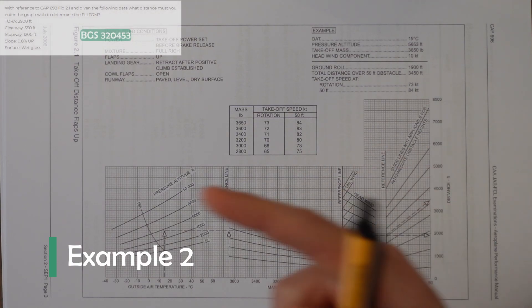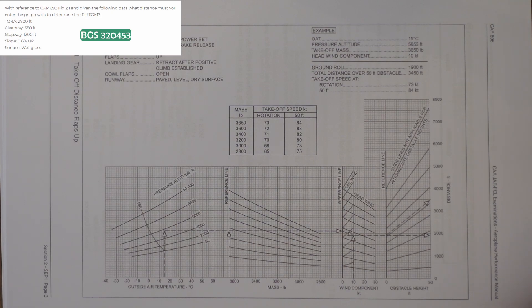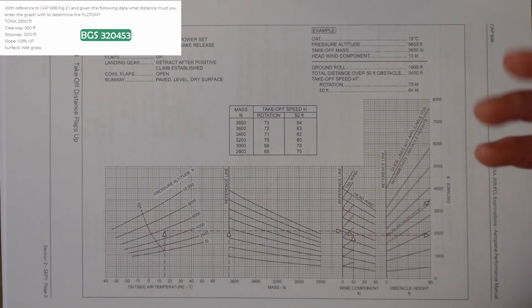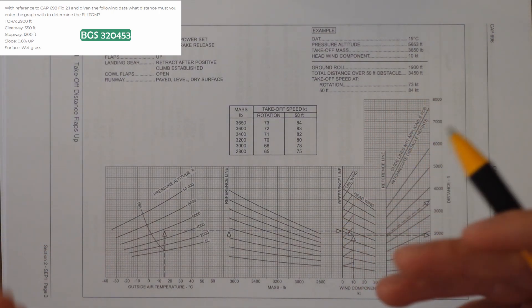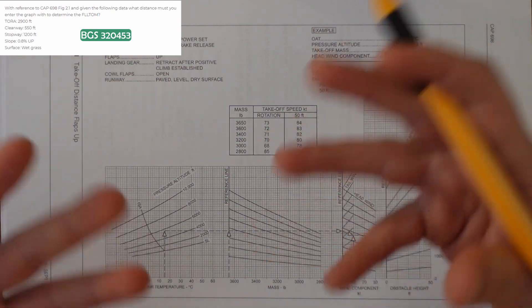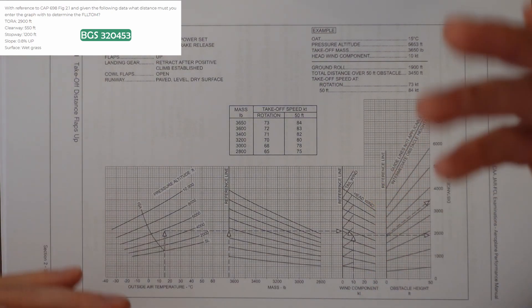Example two has the following details and reference number. We have a takeoff run available of 2,900, clearway of 550, stopway of 1,200, 0.8% upslope, and it's wet grass. The question wants to know what distance to enter the graph with to determine the field length limiting takeoff mass. In the last example, we put in everything we knew, but in this way we need to sort of do it in reverse. We're working backwards because we don't know the mass.